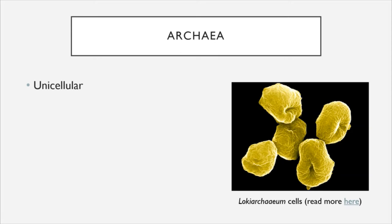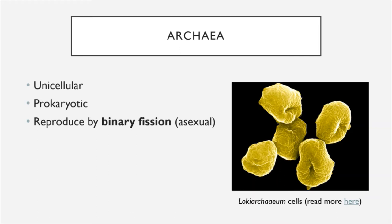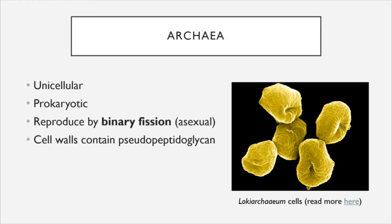Next we'll look at our second category of microbes: archaea. Archaea, like bacteria, are unicellular and prokaryotic — bacteria and archaea are the only two categories that are both unicellular and prokaryotic. They also reproduce through binary fission. Where they diverge from bacteria is that their cell walls do not contain peptidoglycan; they are composed of a different substance called pseudopeptidoglycan.